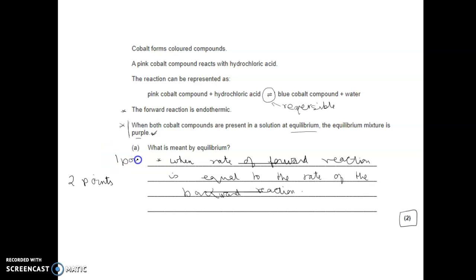You've talked about the first point where the rate of the forward reaction is equal to rate of the backward reaction. Now you've got to think, what is the second point that I have to make? Do I talk about the word dynamic here? Do I say that the reaction is still going on? But when you look at it, they've not mentioned that you've got to explain the meaning of the word dynamic.